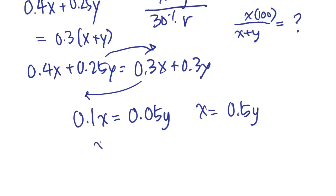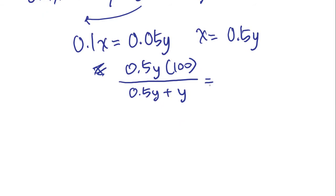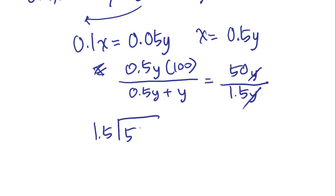We plug in 0.5Y everywhere we see X. So that gives us 0.5Y times 100 over 0.5Y plus Y. The denominator is 1.5Y, and the numerator is 50Y. Cancel out the Ys, and we have 50 divided by 1.5. Moving the decimal point over, 15 goes into 50 three times, giving 33 and it keeps repeating.